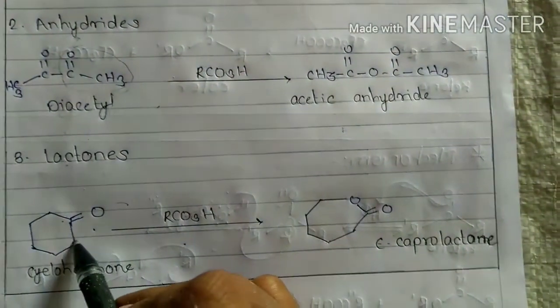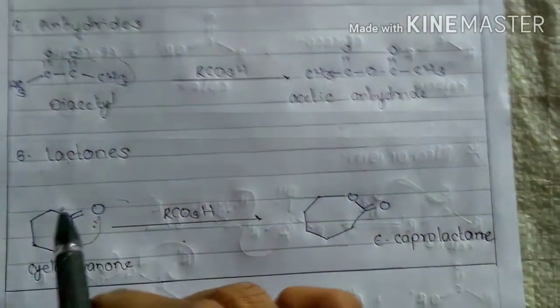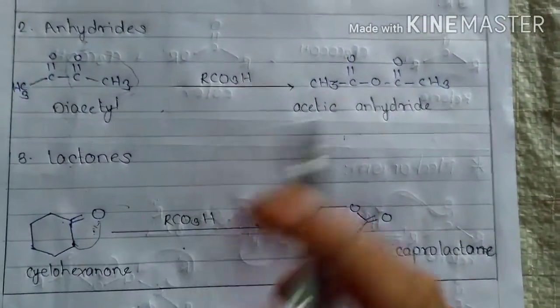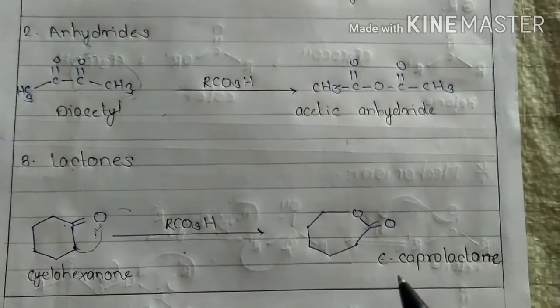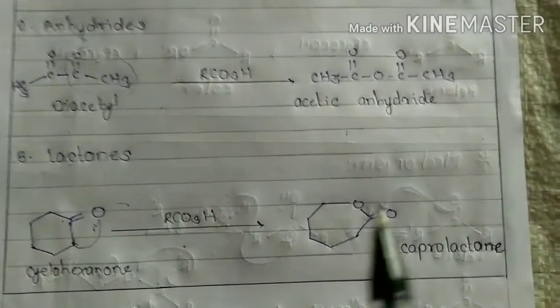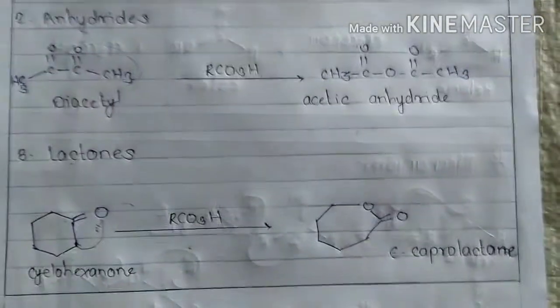This group, this CH2 migrates over here. And the formation of our lactone, that means here we can call it epsilon-caprolactone. Epsilon-caprolactone is formed. So this is the formation of lactone.